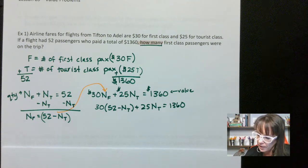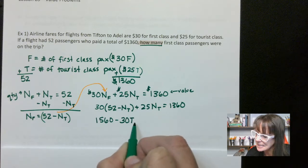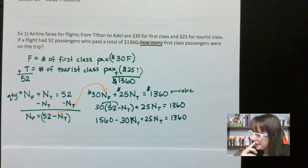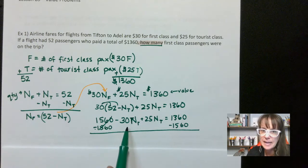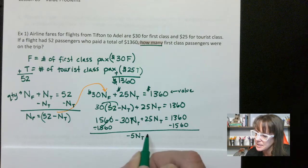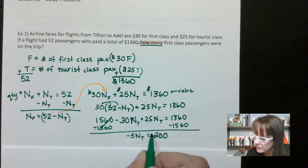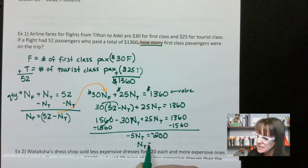That gives me 30 times the quantity (52 minus N sub T) plus 25 N sub T equals 1,360. Now we only have N sub T. Distributing: 30 times 52 is 1,560, minus 30 N sub T plus 25 N sub T equals 1,360. Combining like terms: negative 30 N sub T plus 25 N sub T is negative 5 N sub T. And 1,360 minus 1,560 equals negative 200. Signs are important — you shouldn't be getting negatives because you can't have a negative number of passengers. Divide both sides by negative 5 and we get N sub T equals 40.